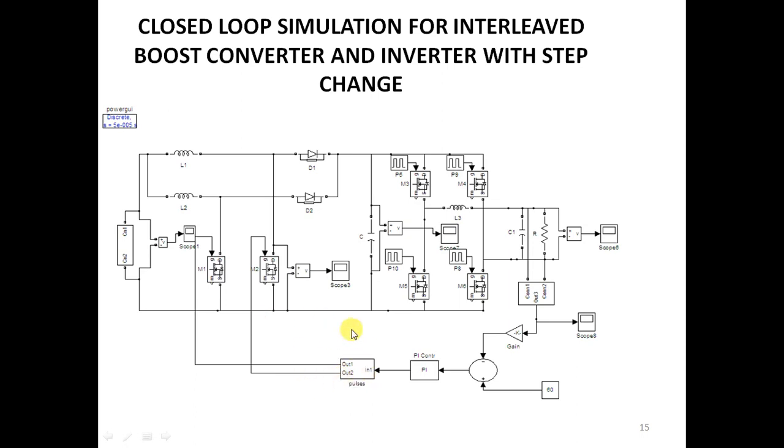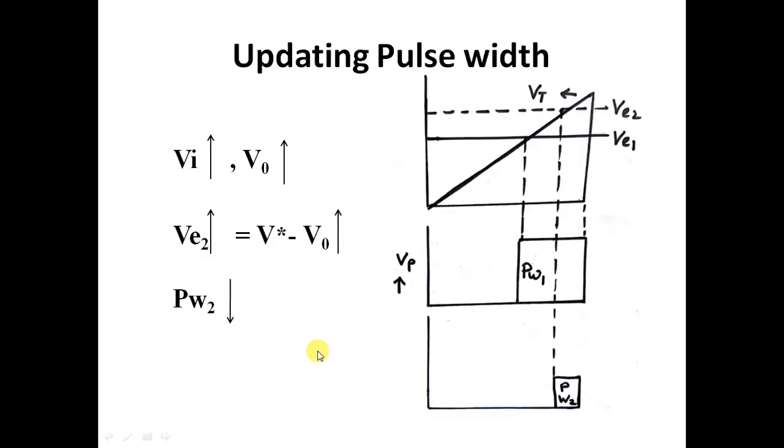Let us see what happens in this. You have a comparator which compares a triangular waveform and this is the output of the PI controller. Output of the comparator will be a pulse. Now, input voltage increases, output voltage increases, the error increases. When the error increases, the new pulse width decreases. This you can compare with that analogy of daughter driving the scooter or bike. When speed increases, what she will do is she will reduce the acceleration. Here, when input voltage increases, we reduce the pulse width.